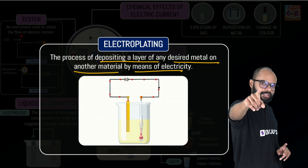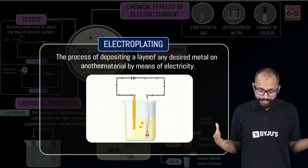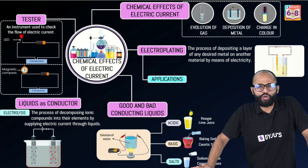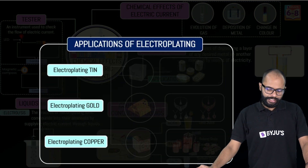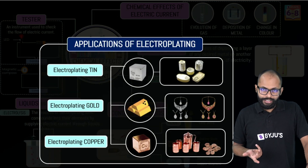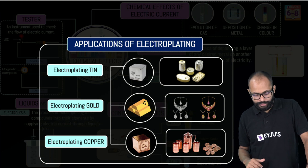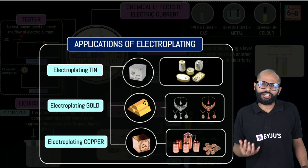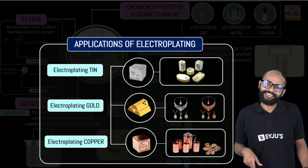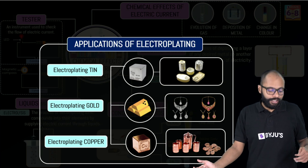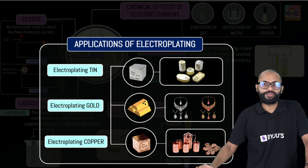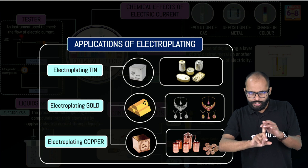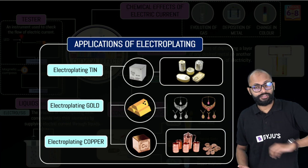In the one-shot session we spent a lot of time on electroplating. What are its applications? We electroplate things with tin — tin cans, for instance. We electroplate with iron. Gold electroplating makes things shinier and more precious. Electroplating with copper is also common. You have seen chromium electroplating on rims, handles, and cycles. There are many examples, and we covered multiple questions on this in the one-shot session, including NCERT examples.